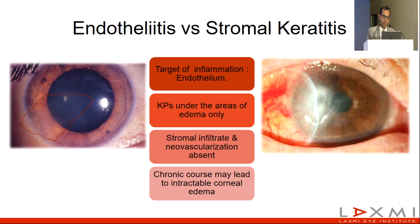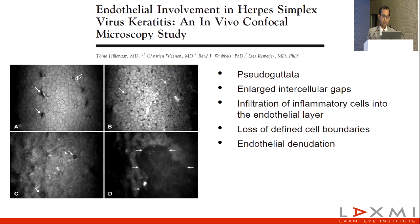As compared to stromal keratitis, the target of inflammation is just the endothelium, and the KPs are under the areas of edema only in most of these cases. There is an absence of stromal infiltration as well as neovascularization in HSV endothelitis. A chronic course may lead to intractable corneal edema or faint scarring, resulting in loss of visual acuity.